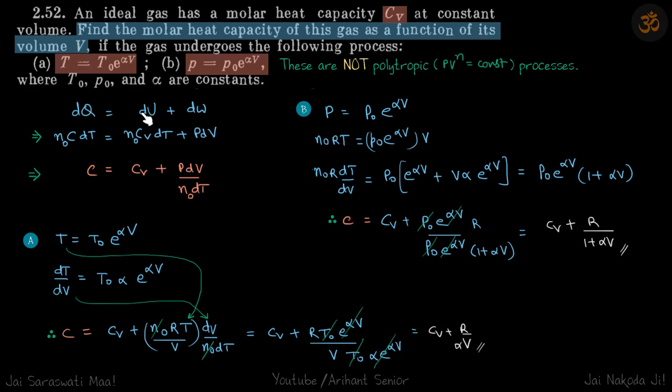So we'll turn the pressure in terms of volume. So we'll write the pressure as n₀RT by V, and we'll just put the value of dT by dV here and get our answer.